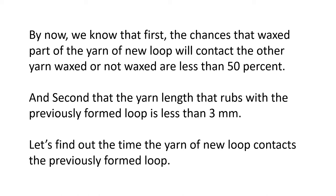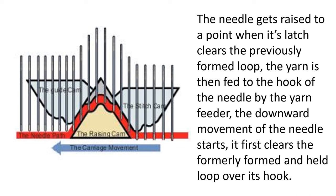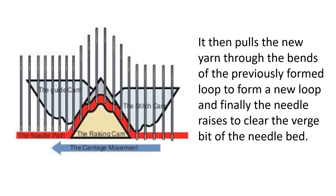Now let's find out the time the yarn of new loop comes in contact with the previously formed loop. The complete cycle of the loop formation starts from the time when the needle holding the previously formed loop starts moving up till the time it forms the loop and comes to rest again. The needle gets raised to a point when its latch clears the previously formed loop. The yarn is then fed to the hook of the needle by the yarn feeder. The downward movement of the needle starts. It first clears the formerly formed and held loop over its hook. It then pulls the new yarn through the bends of the previously formed loop to form a new loop. And finally the needle raises to clear the verge bit of the needle bed.